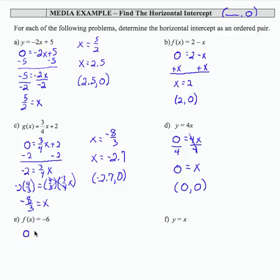For part e, if I set 0 equal to negative 6, well, 0 doesn't equal negative 6. That's a falsehood. So there is no horizontal intercept here for this function. And that's a horizontal line that does not pass through the x-axis.